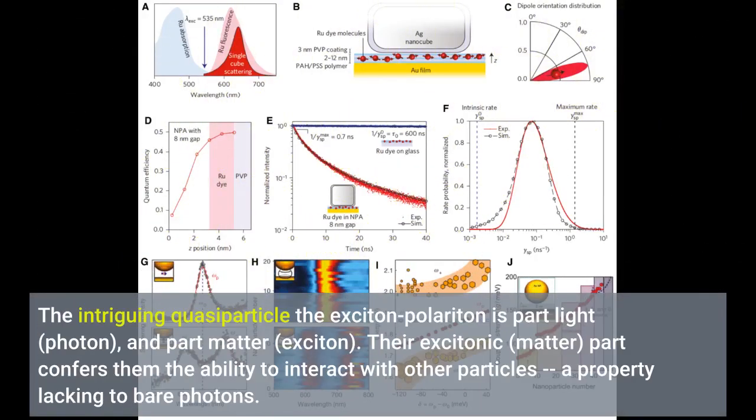The intriguing quasiparticle, the exciton-polariton, is part light (photon) and part matter (exciton). Their excitonic matter part confers them the ability to interact with other particles, a property lacking to bare photons.